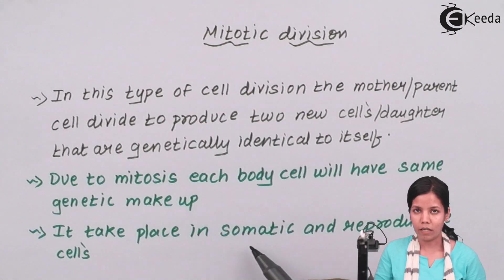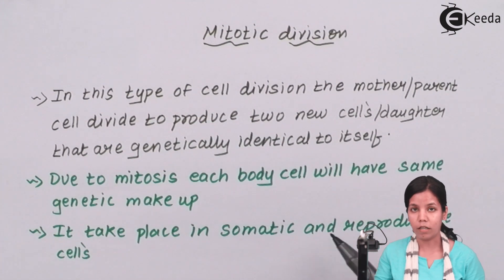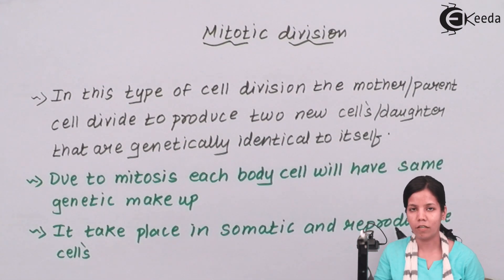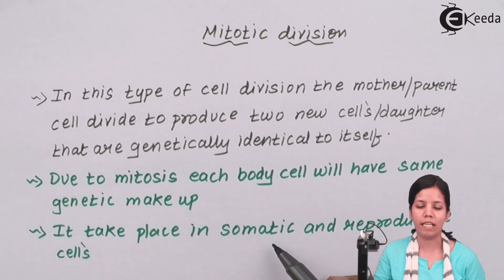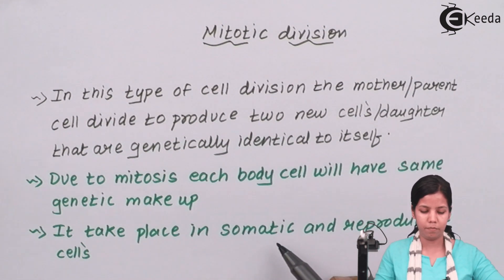This mitotic division takes place during reproduction also, in the reproductive phase in the later stage, and in somatic cells, it always takes place.